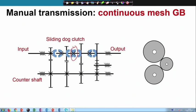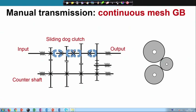If this dog clutch is engaged on the left, you have transmission in that path. If you engage it on the right, then the transmission changes accordingly. So you can change the transmission by sliding the dog clutches instead of the gears. These dog clutches are on the spline shaft, which means they cannot rotate with respect to the output shaft, but they can slide on it.